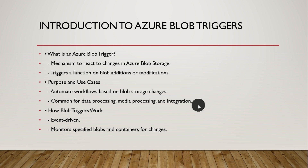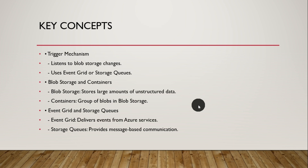How a Blob Trigger works is event-driven. Whenever any blob data gets uploaded to the blob container, it will automatically get triggered. You can also specify a specific container for changes — your function will be listening for changes in that container and processing the trigger. Blob storage is basically a storage where you can store a large amount of blob data.